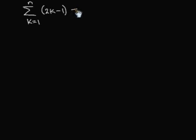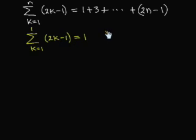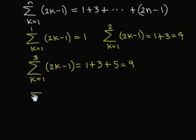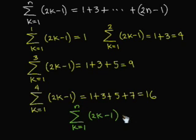We have seen before that it's not very difficult to guess some of the formulas to compute the sum of some sequences. For example, summation from k equal 1 to n of 2k minus 1 equals 1 plus 3 plus up to 2n minus 1. Computing the partial sums for n equal 1, 2, 3, and 4 gives 1, 4, 9, and 16 respectively. So we can suspect that summation from k equal 1 to n of 2k minus 1 equals n squared.